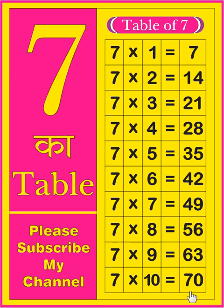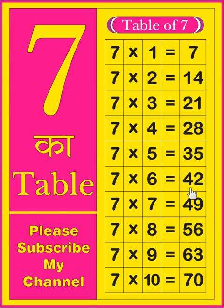Let's learn once again. 7 × 1 = 7, 7 × 2 = 14, 7 × 3 = 21, 7 × 4 = 28, 7 × 5 = 35, 7 × 6 = 42, 7 × 7 = 49, 7 × 8 = 56, 7 × 9 = 63, 7 × 10 = 70.